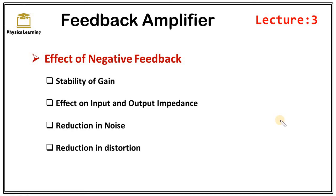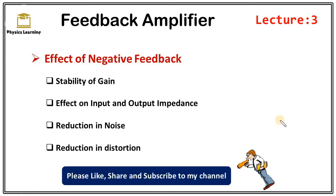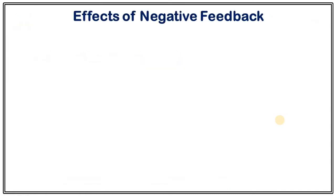This is the third video on feedback amplifiers. In this video, I am going to discuss the effect of negative feedback on an amplifier — how negative feedback can change gain, input impedance, output impedance, noise, distortion, and many more things. In the first video, I discussed that negative feedback reduces the gain of an amplifier, but in spite of this reduction, negative feedback provides many advantages, and that is why negative feedback amplifiers are used in electronic circuits.